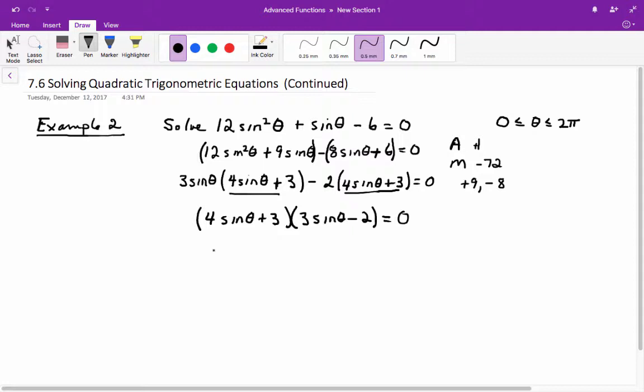And that leaves 3 sine theta minus 2 left over. When you set each of these equal to 0, 4 sine theta plus 3 equals 0, you get 4 sine theta equal to negative 3, which means that sine theta equals negative 3 over 4. From the other one, you get 3 sine theta minus 2 equals 0, which gives you 3 sine theta equals 2, or sine theta equals 2 thirds.